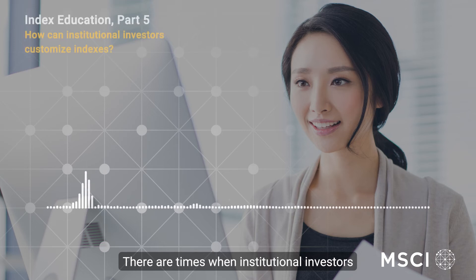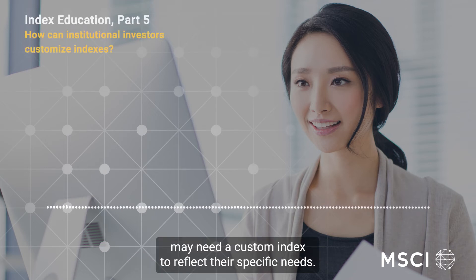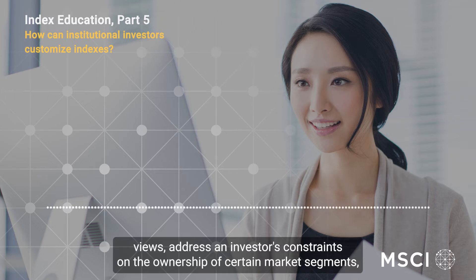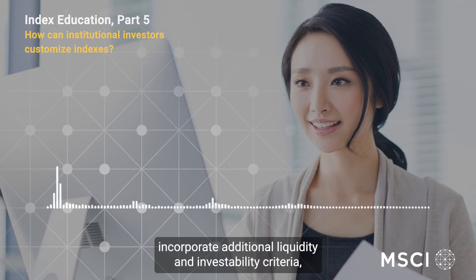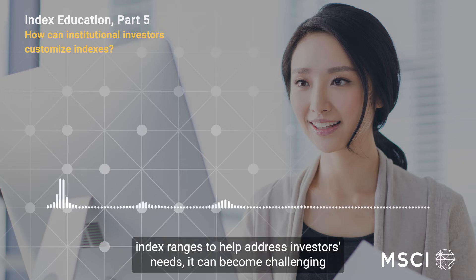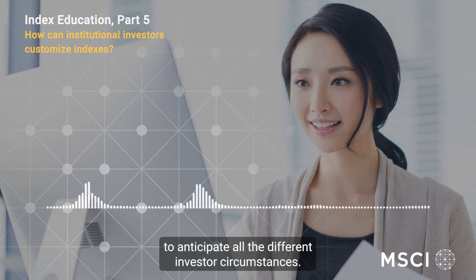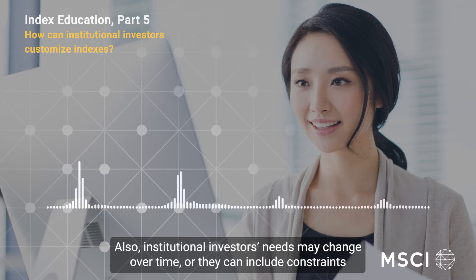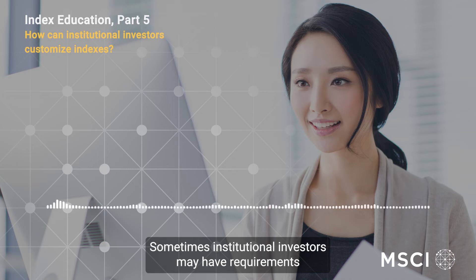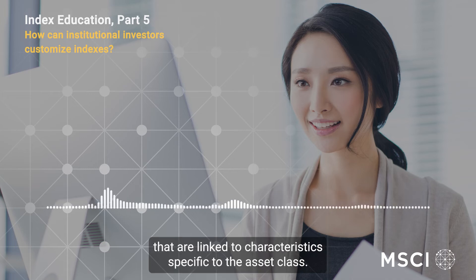There are times when institutional investors may need a custom index to reflect their specific needs. These client-designed indexes may be used to better reflect asset allocation views, address an individual investor's constraints on the ownership of certain market segments, incorporate additional liquidity and investability criteria, or to include specific regulatory guidance. While index providers have created extensive index ranges to help address investors' needs, it can become challenging to anticipate all the different investor circumstances. Institutional investors' needs may change over time, or they can include constraints that are transitory in nature and a temporary solution has to be implemented. Sometimes institutional investors may have requirements that are linked to characteristics specific to the asset class.